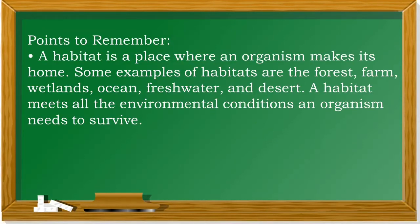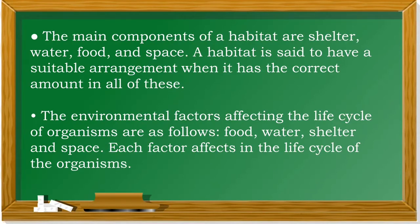Points to remember: A habitat is a place where an organism makes its home. Some examples of habitats are the forest, farm, wetlands, ocean, freshwater, and desert. A habitat meets all the environmental conditions an organism needs to survive. The main components of a habitat are shelter, water, food, and space. A habitat is said to have a suitable arrangement when it has the correct amount of all of these. The environmental factors affecting the life cycle of organisms are food, water, shelter, and space.